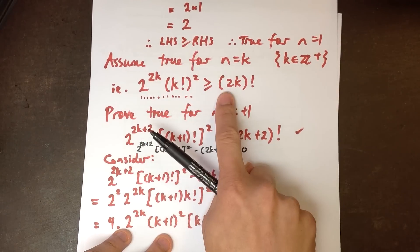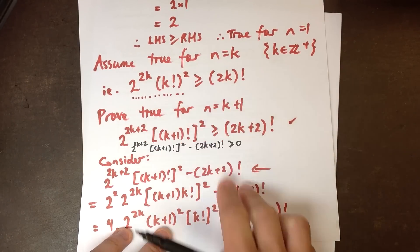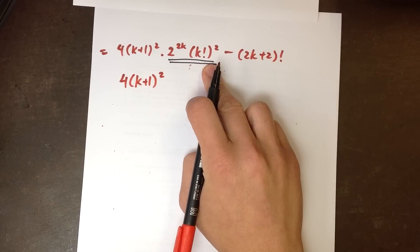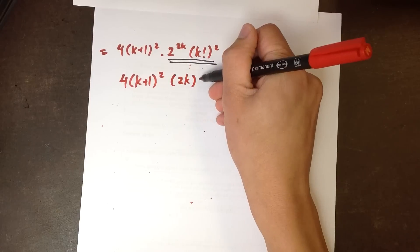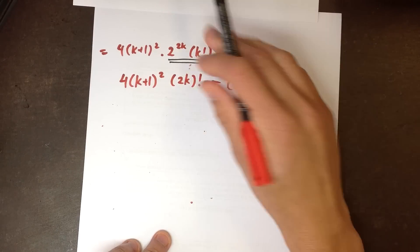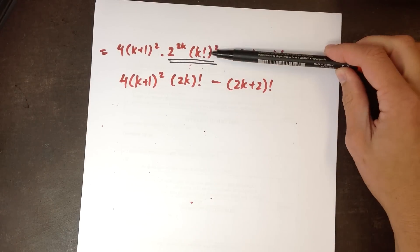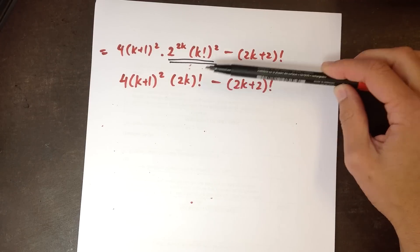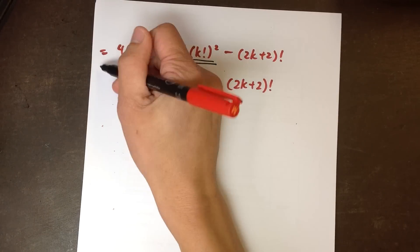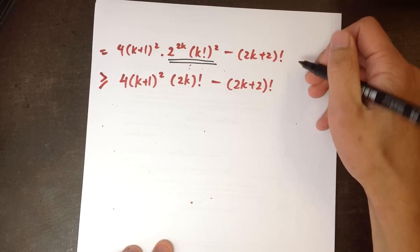So I know that piece is bigger than 2k factorial. If I swap it out for 2k factorial, everything else in the line stays the same. So what's the relationship between the two lines? We assumed that 2 to the 2k times k factorial squared is bigger than 2k factorial. Since that's the only thing I've changed, this entire line is greater than or equal to this line by assumption. That equal sign becomes an inequality — greater than or equal to — by assumption.